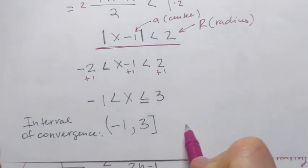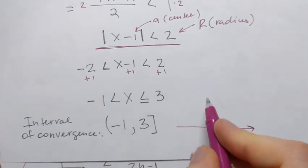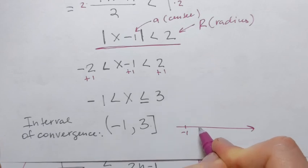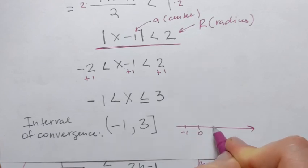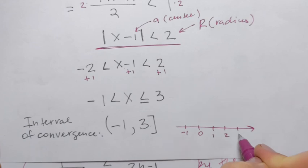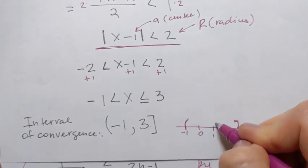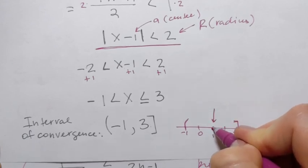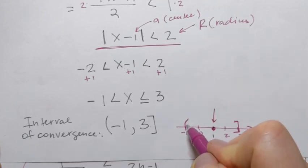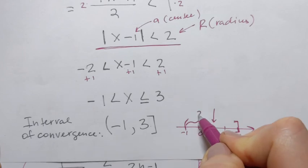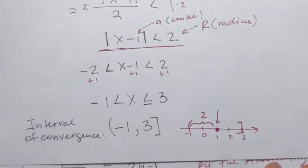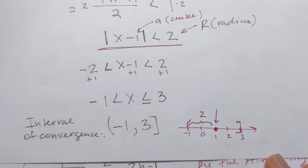If you construct this interval on a number line: negative 1, 0, 1, 2, 3 — the interval from negative 1 to 3 clearly has center at 1 and radius 2. That's how we find the interval of convergence for this power series.